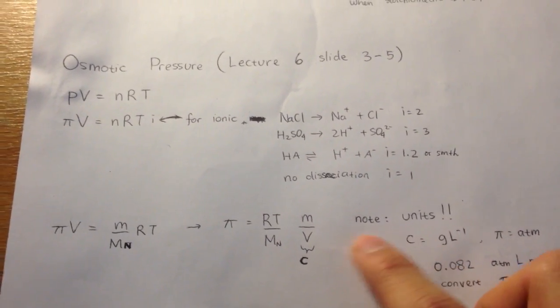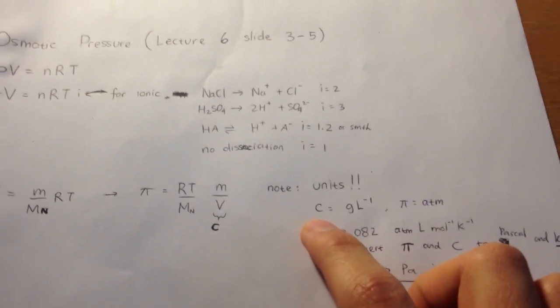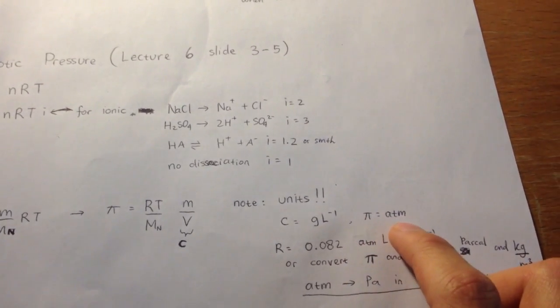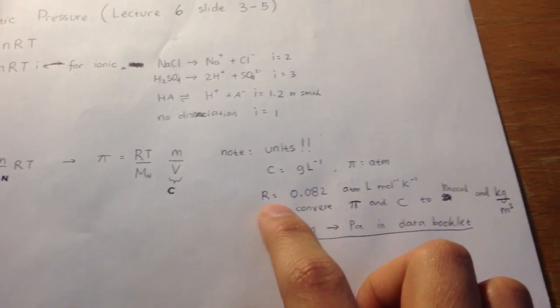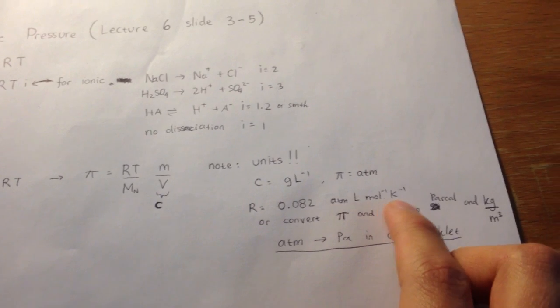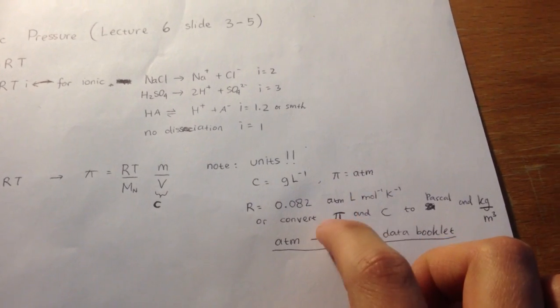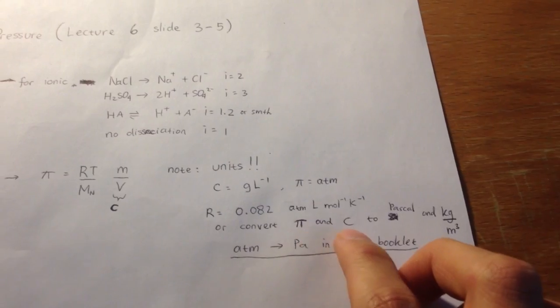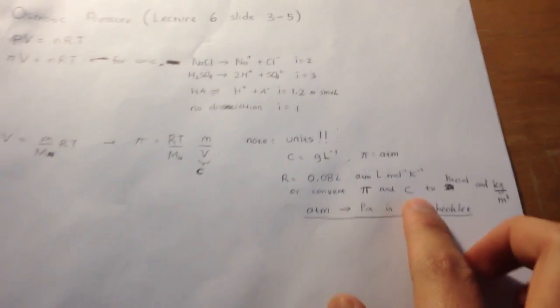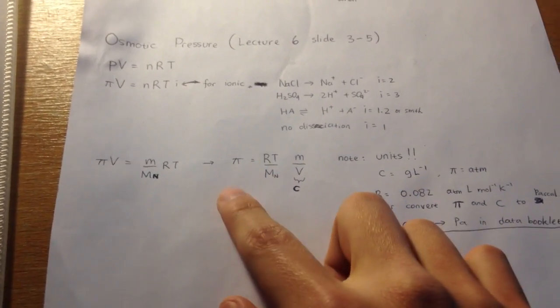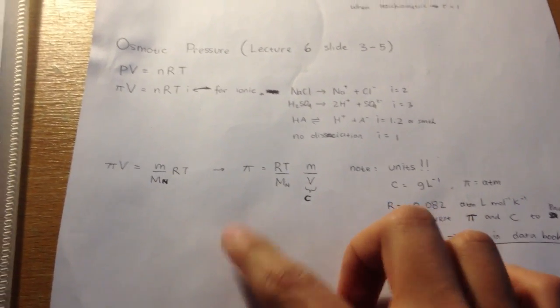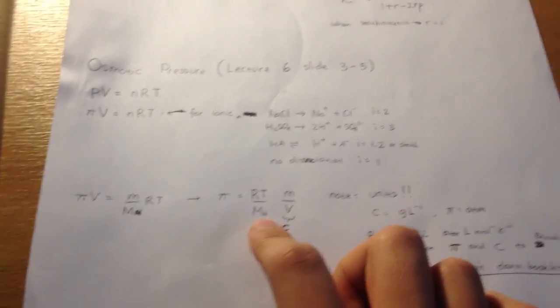Now, units is quite challenging in this part because sometimes the problem uses grams per liter and the osmotic pressure is in atmospheres. You can either use R as 0.082 atm liter per mole per Kelvin, or you can convert pi from atm to Pascal. The conversion is in the data booklet, so no worries to memorize it. And you convert C into kilograms per meter cubed. Usually in the problems, you're given all the phi and all the C, so you just measure the gradient and you'll find the average molar mass.